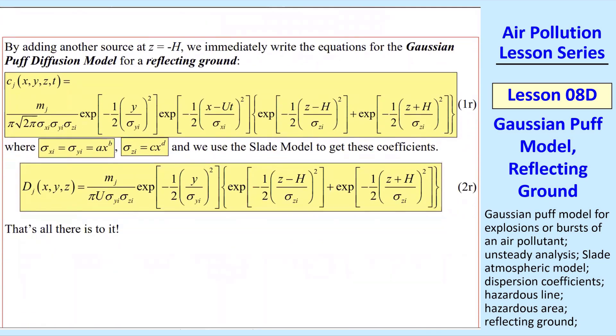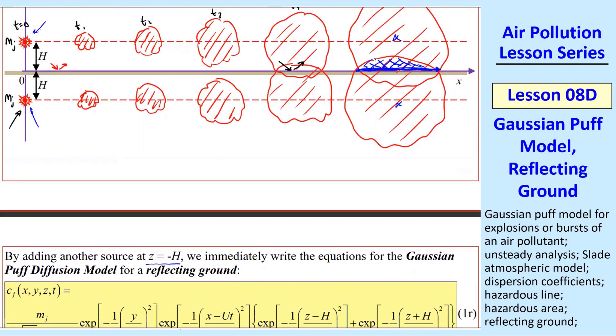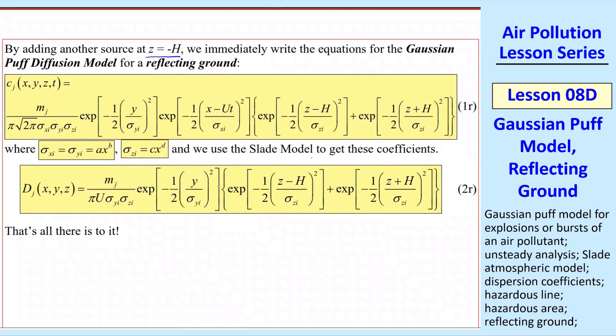We add a source at z equal negative h. It's easy to write this equation. This is now equation 1r. It's the same equation as 1a, except now we've added this extra term. We had before a z minus h, and now I'm adding a z plus h term within these curly brackets. These exponential terms with x and y multiply these two terms together.